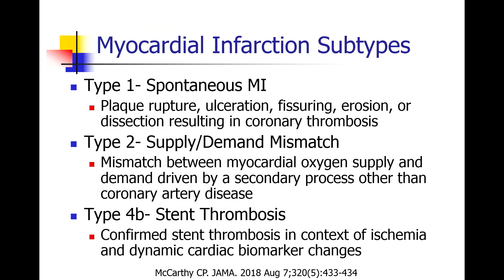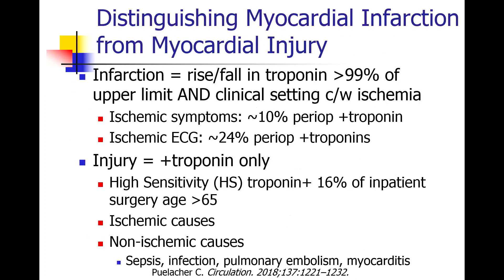One of the things we want to focus on is the types of myocardial infarctions — there are actually several types. The types most common in the perioperative period are: a type 1 MI or spontaneous MI, the classic MI in which somebody has a plaque rupture and acute thrombus occurs in their coronary artery; a type 2 MI, which is an imbalance between oxygen demand and oxygen supply but not due to coronary artery or atherosclerotic disease; and type 4B, which is acute stent thrombosis — also seen in the perioperative period.